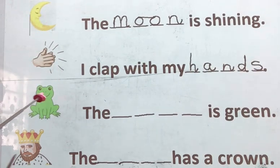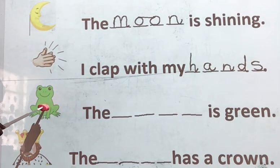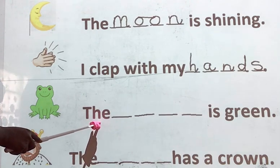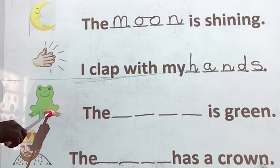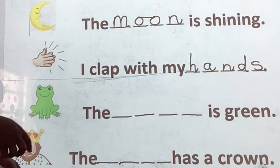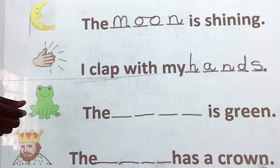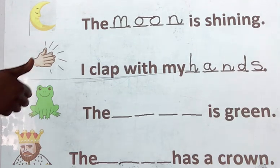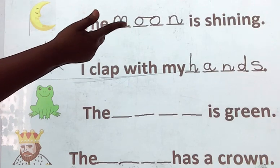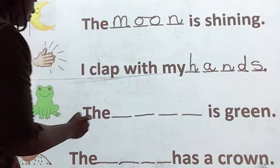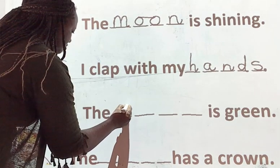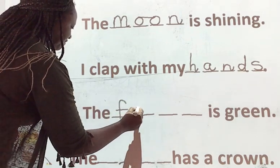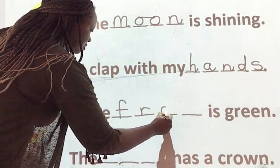Yes. Now the next picture — frog. It's a tricky word, you know, right? The frog. Give me the sounds. Remember, R is there — not fog. Let's write. Write with me. Go. Frog.